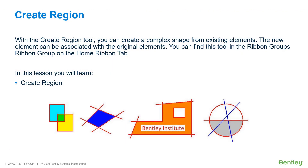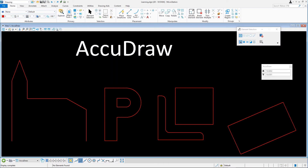With the Create Region tool, you can create a complex shape from existing elements. The new element can be associated with the original elements. You can find this tool in the Ribbon Groups ribbon group on the Home ribbon tab. In this lesson, you will learn Create Region. Continuing in learning.dgn, open the Create Region model.